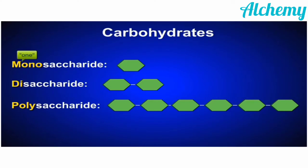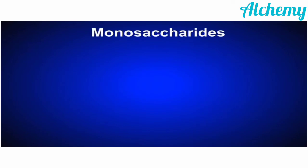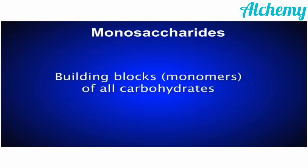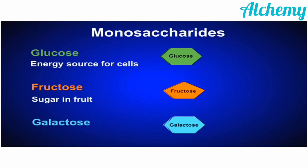In summary, carbohydrates are divided into mono-, di-, and polysaccharides. Monosaccharides are made up of one unit of sugar, disaccharides of two units, and polysaccharides of many units. Monosaccharides are the building blocks of all carbohydrates. The important monosaccharides are glucose, fructose, and galactose. Glucose is the energy source for cells, fructose is the sugar found in fruits, and galactose is the sugar found in milk. These three monosaccharides share the general chemical formula C6H12O6.